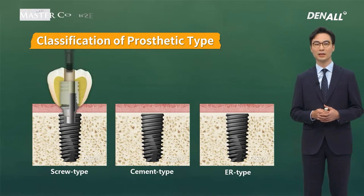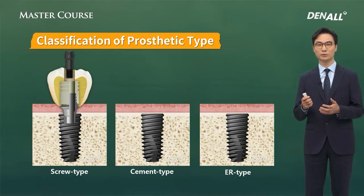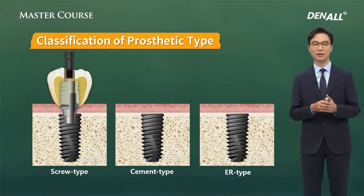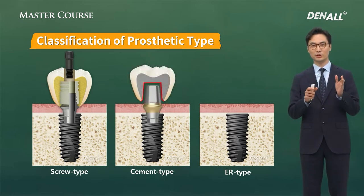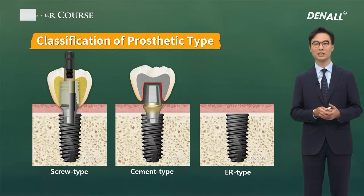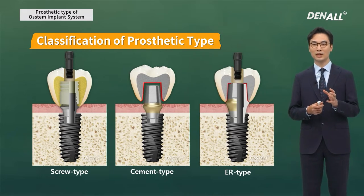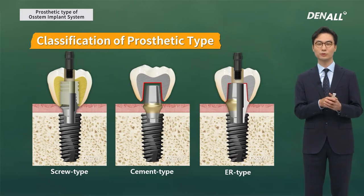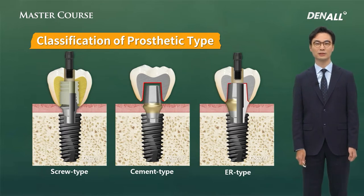First, screw type: the abutment and prosthesis are connected into one, and a screw is used to connect the prosthesis with the implant body. For cementation type, the abutment is connected and a bonding agent is used. For ER type, the abutment-prosthesis is cemented, then using the screw hole the screw is removed, the prosthesis is removed, cement is removed, and it is reconnected.